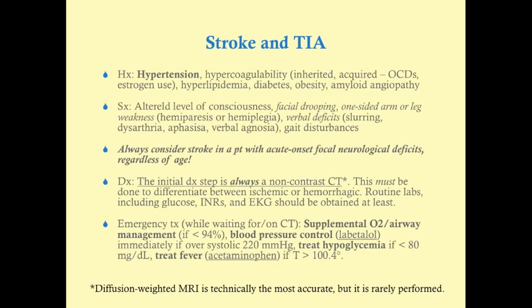The first initial step is a non-contrast CT — this is your initial diagnostic step, provided the patient is stable. The most accurate test is a diffusion-weighted MRI, but it's rarely performed first because it takes much more time than a head CT. The CT is essential to differentiate between ischemic and hemorrhagic stroke, and to check for any other injuries.